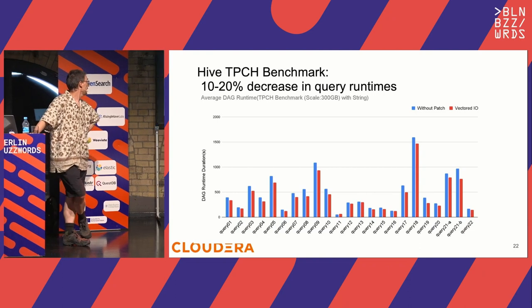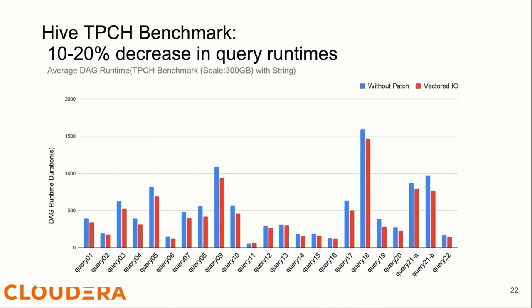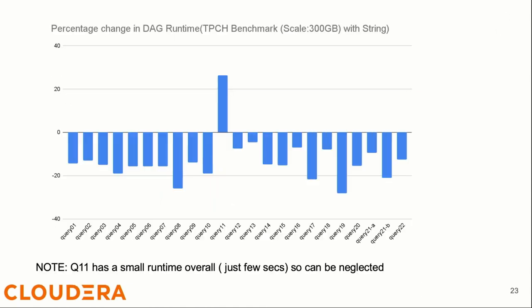In a TPC-H benchmark over 300 gigabytes of data, we're seeing a 10% to 20% decrease in query run times. Looking at the performance improvements across queries, apart from one really small weird one, everything gets faster — roughly 10% or a bit more or less, but consistently. It doesn't get any worse, everything gets better.